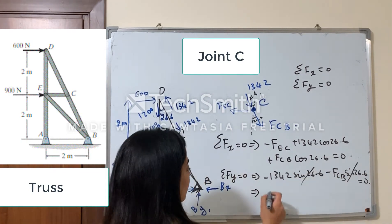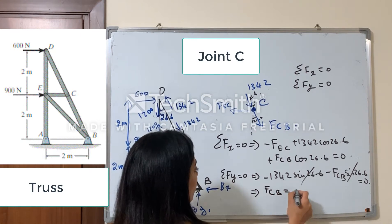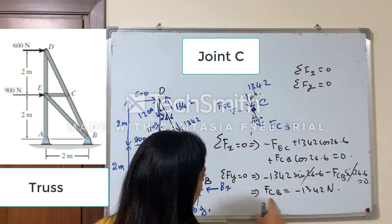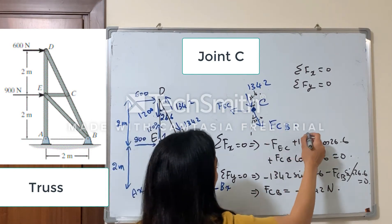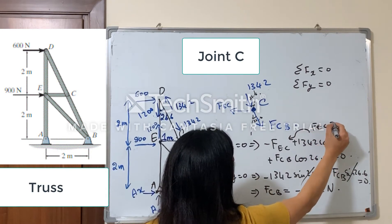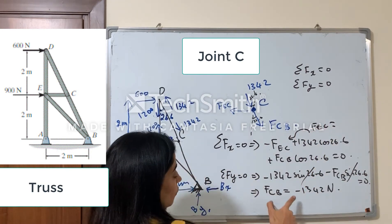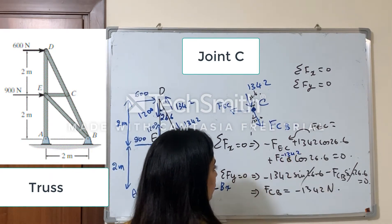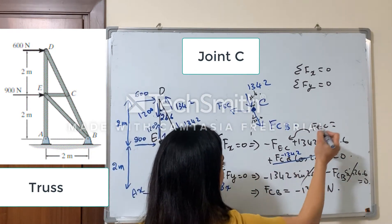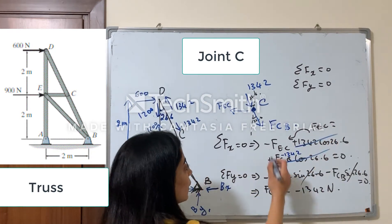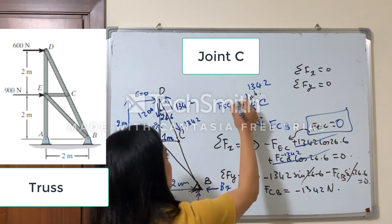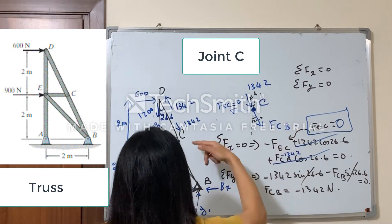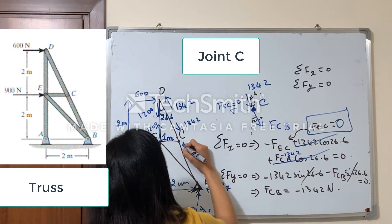This will give me that FCB equals minus 1342 N. And if I substitute this FCB, I can find FEC. Since this is minus 1342 here and minus 1342 here, I can simplify all these terms, so FEC will be equal to zero. FCB is negative, which means it should be in the opposite direction.